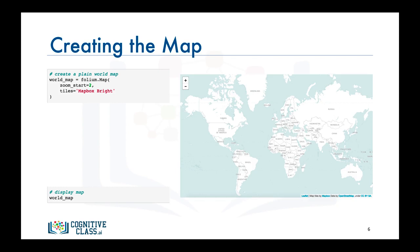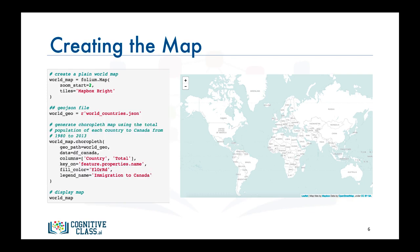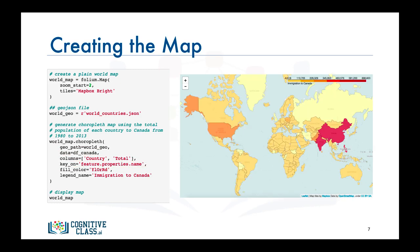To convert this map into a choropleth map, we first define a variable that points to our GeoJSON file. Then we apply the choropleth function to our world map, telling it to use the columns 'country' and 'total' in our DF_Canada data frame, and to use the country names to look up the geospatial information about each country in the GeoJSON file. And there you have it — a choropleth map showing the intensity of immigration to Canada from different countries worldwide.